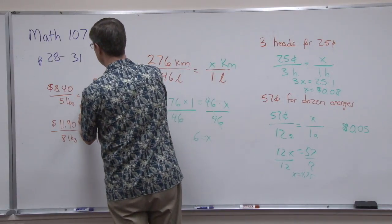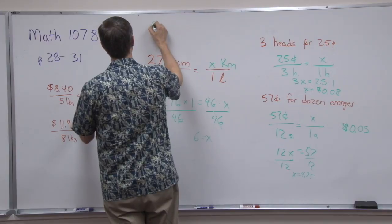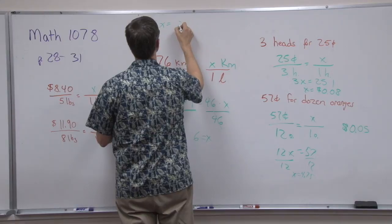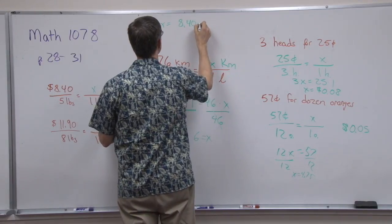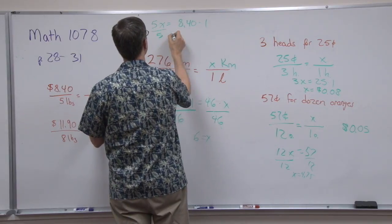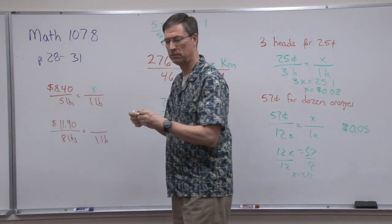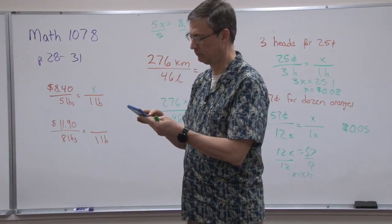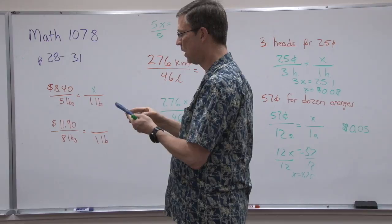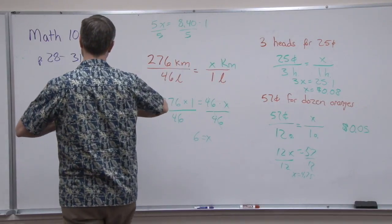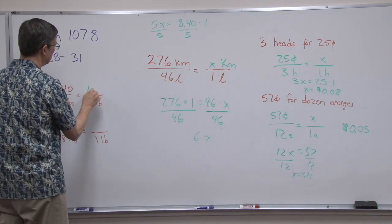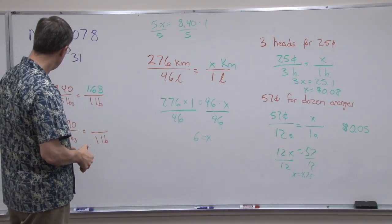We're going to go through the same steps. I'm going to do the math up here, so 5X cross multiply equals 8.40 times one - one pound. So now I can divide by 5. 8.40 divided by 5 is 1.68.